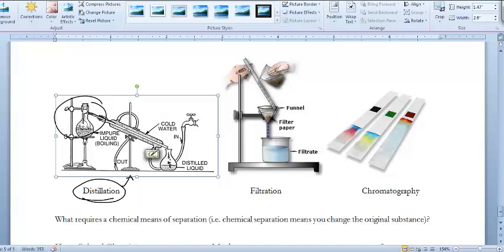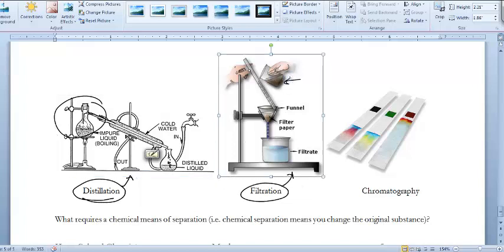Another way is filtration. We have something in this beaker that we know is impure and we want to purify it. So we separate the water from the solid by pouring it through a paper filter. Then we have the nice clean filtrate, which in this case looks like water.